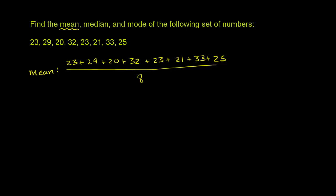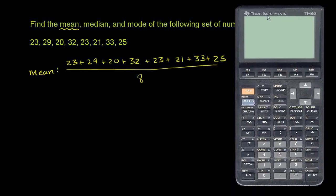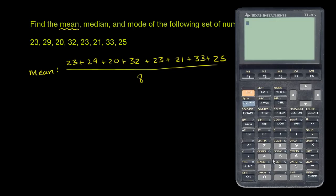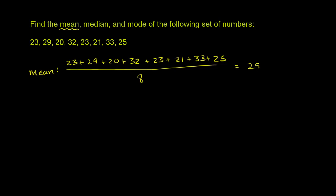So let's figure out what that actually is. I'll just get the calculator out for this part. So we have 23 plus 29 plus 20 plus 32 plus 23 plus 21 plus 33 plus 25. So the sum of all the numbers is 206, and then we want to divide 206 by 8, which gets us 25.75. So the mean is equal to 25.75.